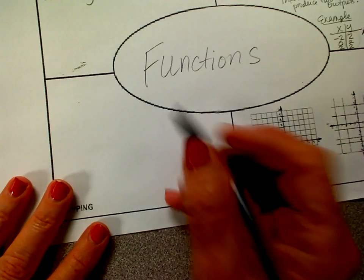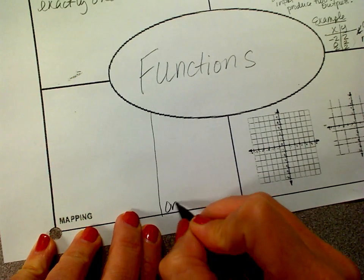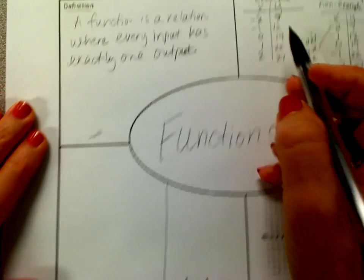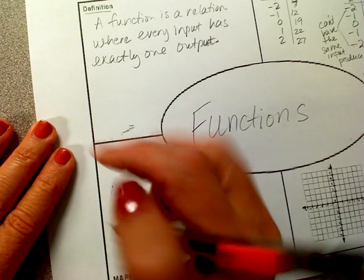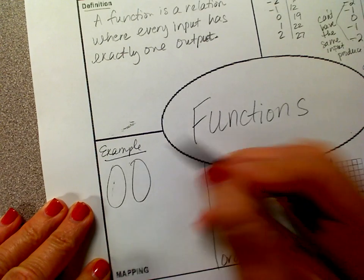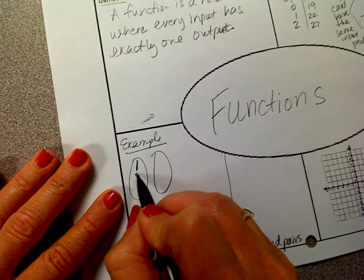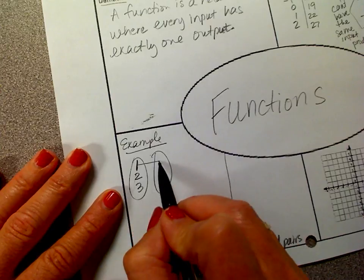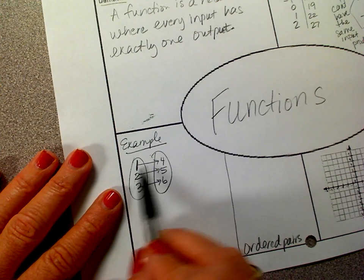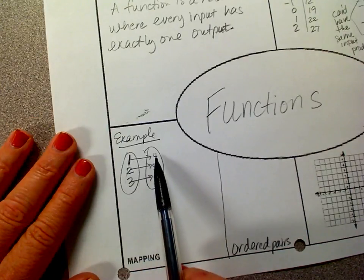Let's look at the mapping format — also put ordered pairs down here. A mapping is very similar to a table, but it looks like this. So for an example: 1, 2, 3 on the input side. 1 is being paired to 4. 2 is being paired to 5. 3 is being paired to 6. Don't worry about the rule right now — we're just identifying functions. Every input went to exactly one output.